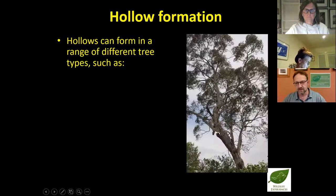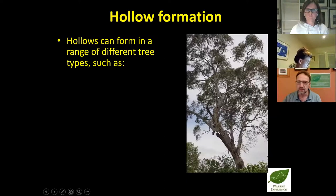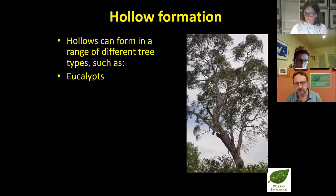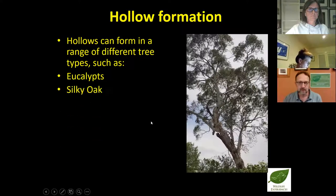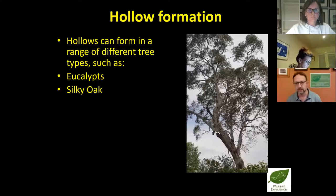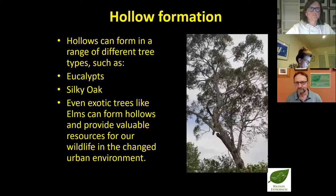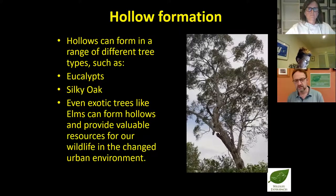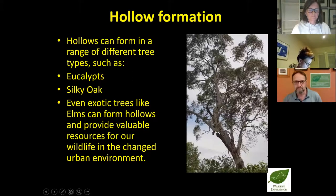Hollows can form in a range of different trees. This is a very large candlebark in my next door neighbor's backyard with a range of hollows — there's one here and others up the main trunk. Eucalypts such as red stringybarks and box trees are common hollow formers, but we also have things like the silky oak, which is native to northern Australia but heavily planted as an ornamental in our parks and backyards across the city. We also have exotic trees — lots of people have a thing about exotics, but elm trees and plane trees can also form hollows over time and provide a valuable resource for wildlife in the changed urban environment.